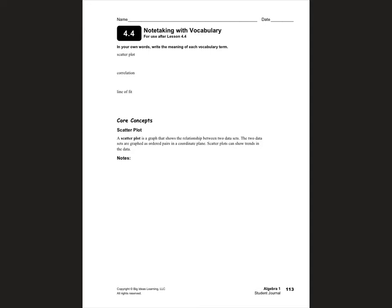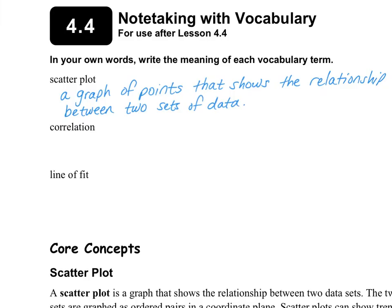Please have your journals open to page 113. A scatterplot is a graph of points that shows the relationship between two sets of data. It's called a scatterplot because it looks like there's a bunch of points that are just scattered onto the graph.